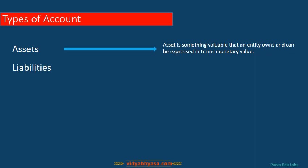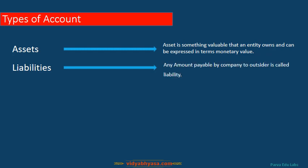The next type of account is liabilities. A simple definition: any amount which is payable by a company to an outsider. If anything is purchased on credit, the company has to make payment to creditors — those creditors are called liabilities. If the company has taken a loan from the bank, the amount to be returned in coming months or years is also termed as liabilities. Any amount payable to an outsider is called a liability.